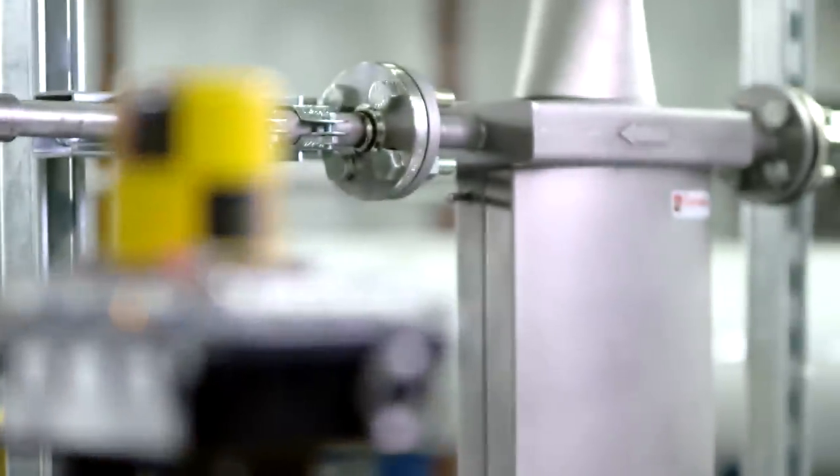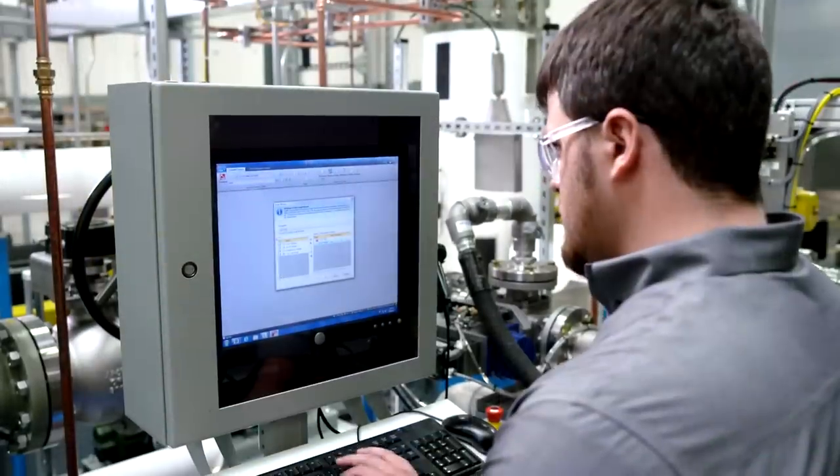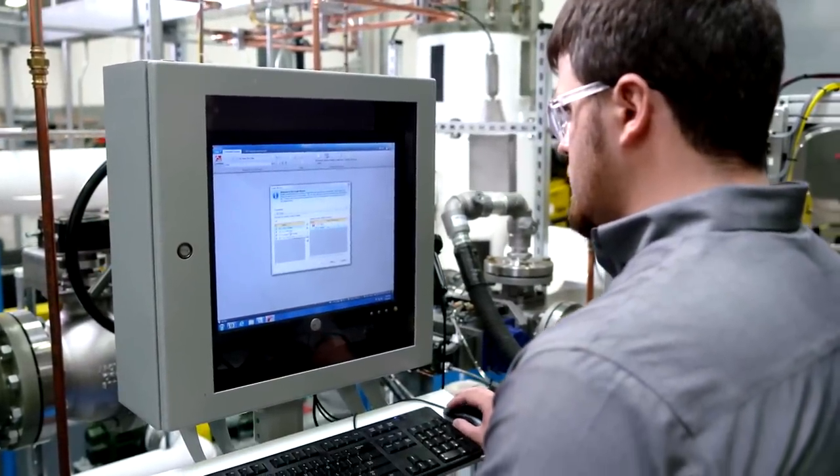That is what you get with Badger Meter's RCT1000 Coriolis Flow System, our latest mass flow meter, coupled with our intuitive RCT console software.